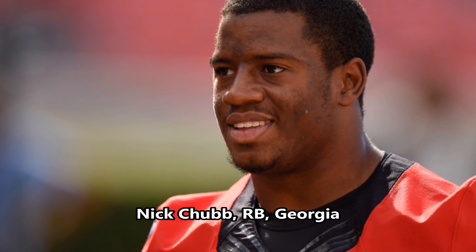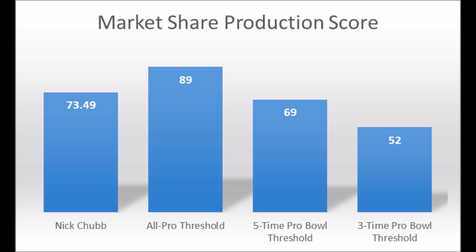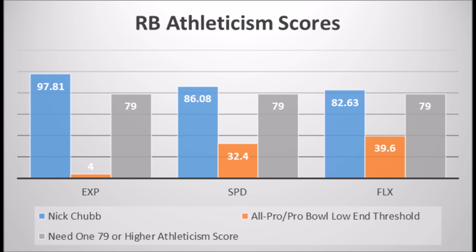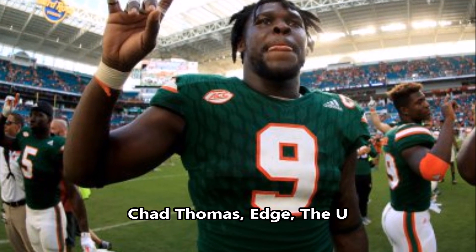Next is Nick Chubb, running back out of Georgia. His production data shows a 73.49 out of 100 market share production score, which doesn't quite hit the all-pro threshold of 89 or higher, but does hit the five-time Pro Bowl threshold of 69 or higher and definitely hits the three-time Pro Bowl threshold of 52. He's pretty close to the average Pro Bowl and starter scores, but doesn't quite have all-pro potential. His athleticism testing shows 97.81 explosive lower body strength, 86.08 speed score, and 82.63 flexibility — pretty much all-pro to Pro Bowl potential athletically. Overall, Chubb has a good chance to become a long-term starter to Pro Bowl player.